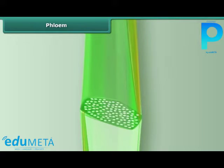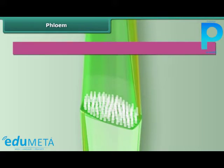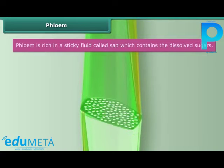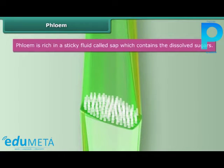Since phloem transports sugar, it is rich in a sticky fluid called sap, which contains the dissolved sugars.